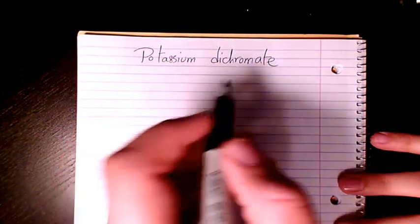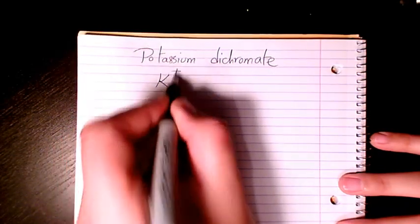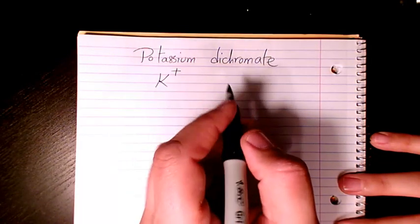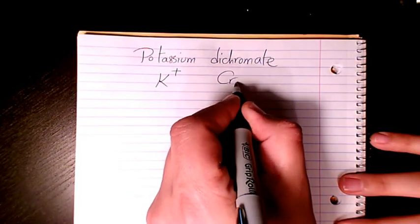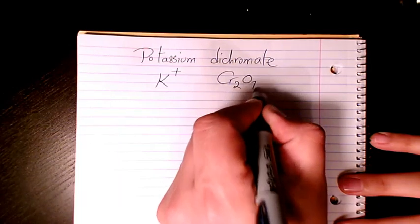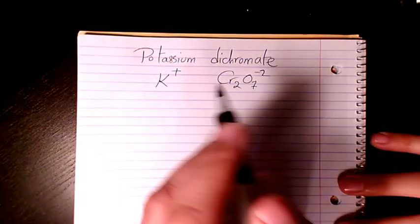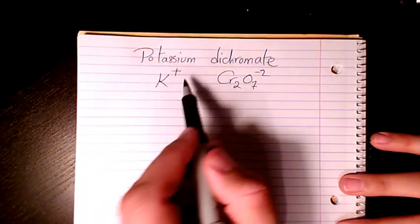So I start with potassium which is K+ and dichromate is a polyatomic ion which is Cr2O7 2-. So dichromate you can write it like that and potassium like that.